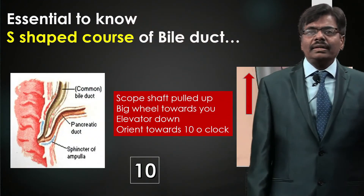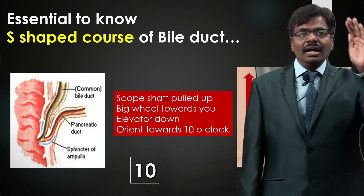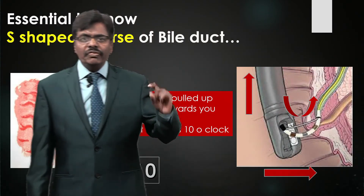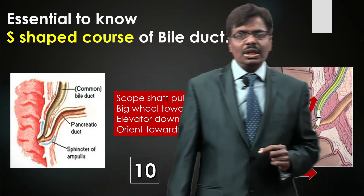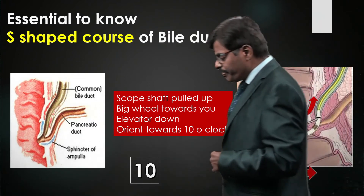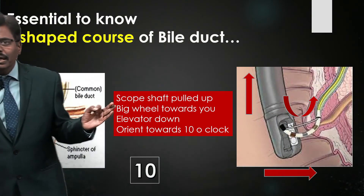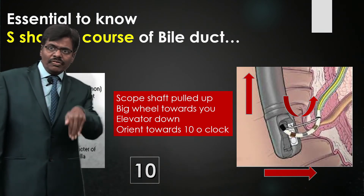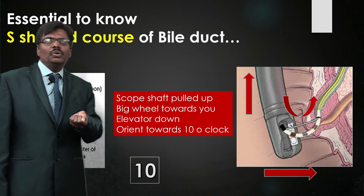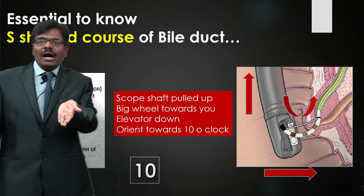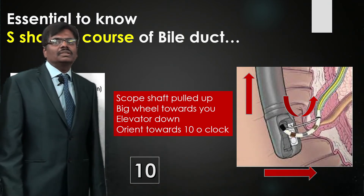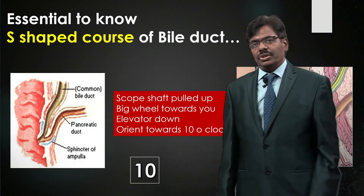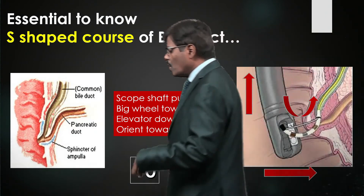To traverse this S-curve, there are three important maneuvers: first, go a little further below the end-facing position; second, pull the scope up with the big wheel toward you to come near; third, elevate down so the wire gets in. Orient your cannulation toward 10 o'clock. Pulling the scope up and big wheel toward you are the two key actions that straighten the S-shaped curve in the distal bile duct.